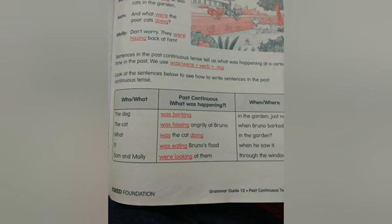Who/what? The dog. Past continuous — what was happening? The dog was barking. When/where? In the garden, just now. A super simple example for everyone to understand past continuous tense.